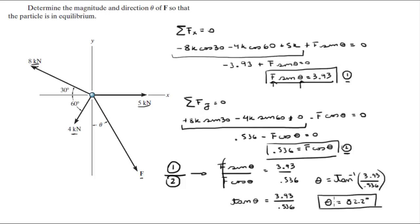So now that you have theta, you can find the magnitude of the force by plugging theta into this formula or this formula, whichever you prefer. And you're gonna get that the force is equal to 3.97, and this is kilonewtons.